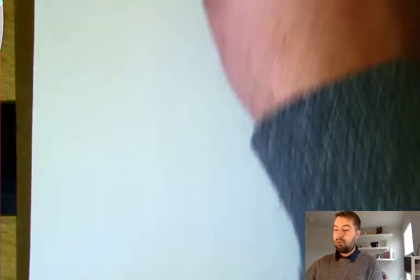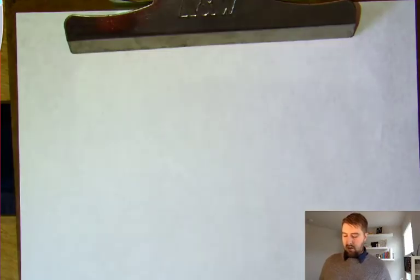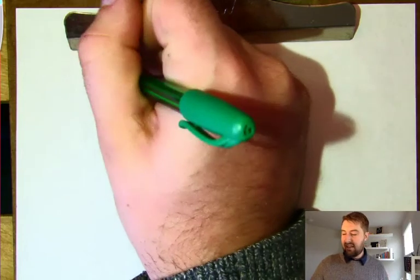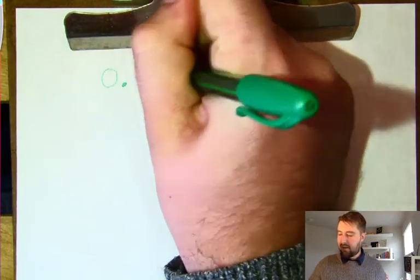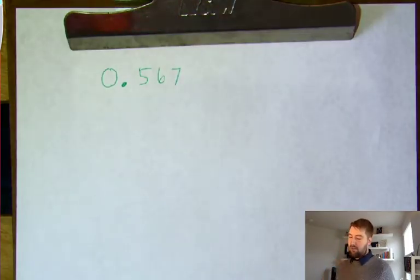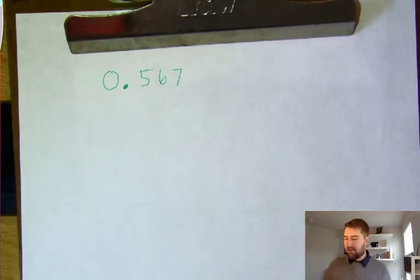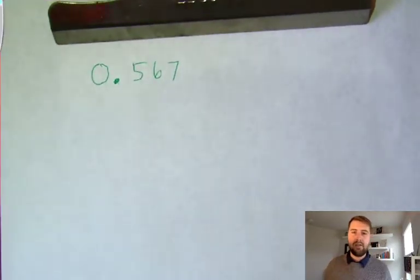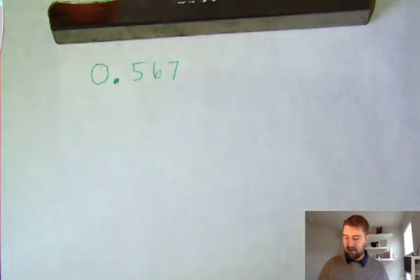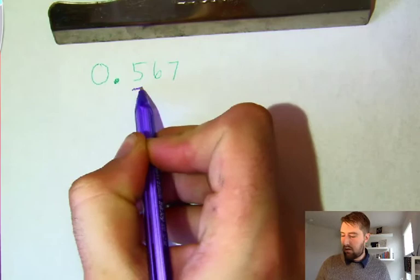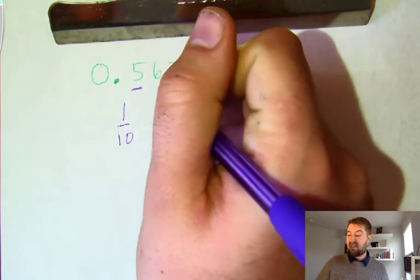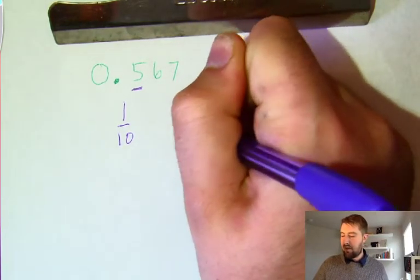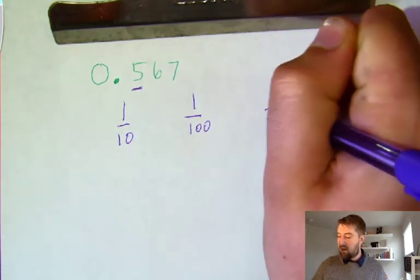We are now going to look at expanded form on the decimal side. We'll start with a number that has zero ones, just to make things a little simpler to start. Our number is 0.567. The decimal place is right here, so zero is in the ones place. The five is in the tenths place—that's our first digit, and it is in the tenths place, so we'll put one-tenth there.